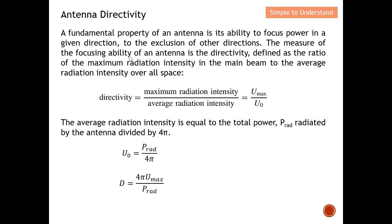Directivity is defined as the measure of the focusing ability of an antenna — specifically, the ratio of the maximum radiation intensity in the main lobe over the average radiation intensity over all space.